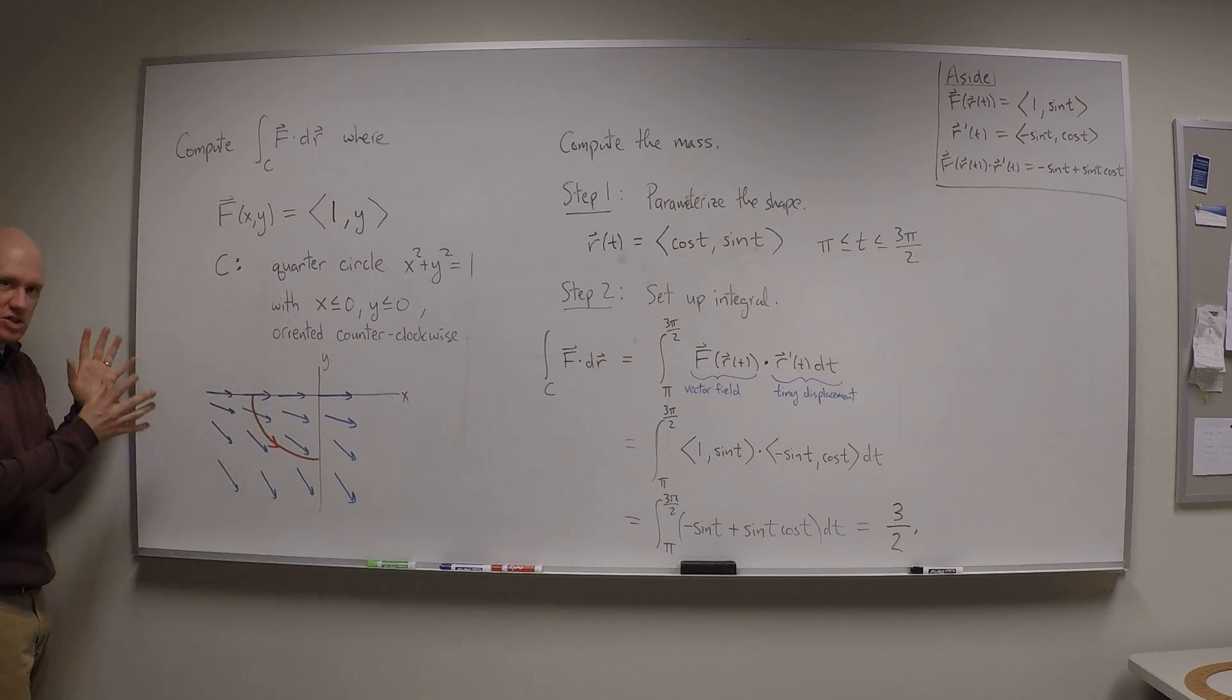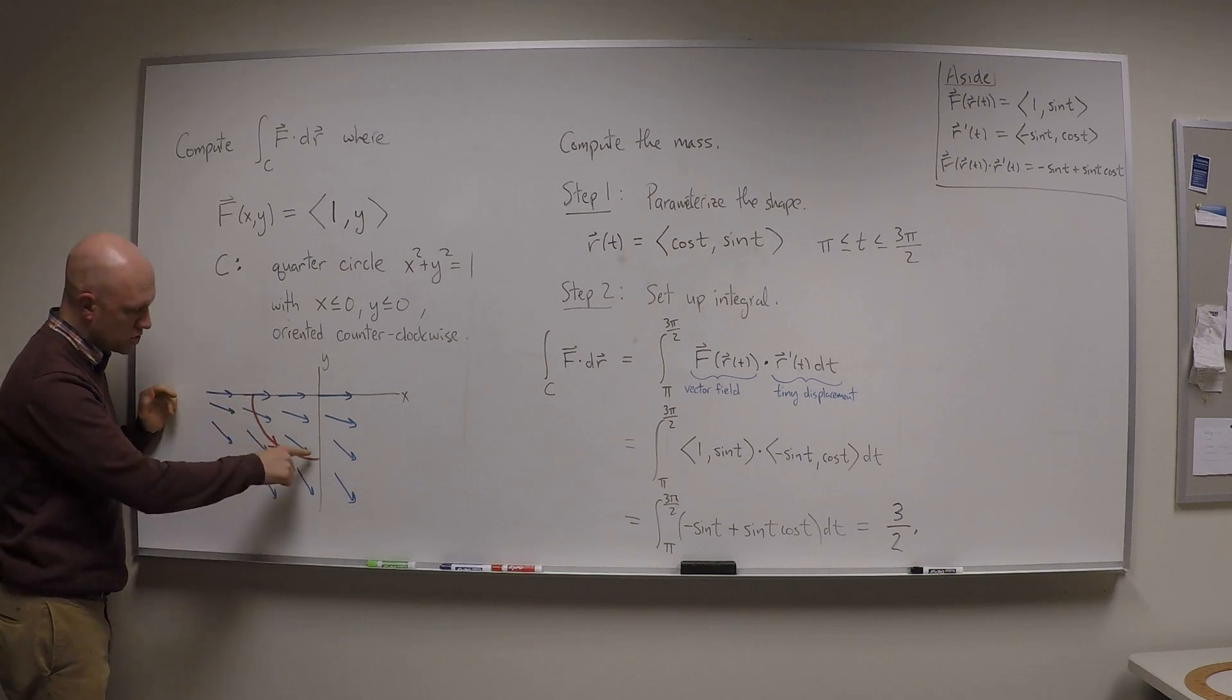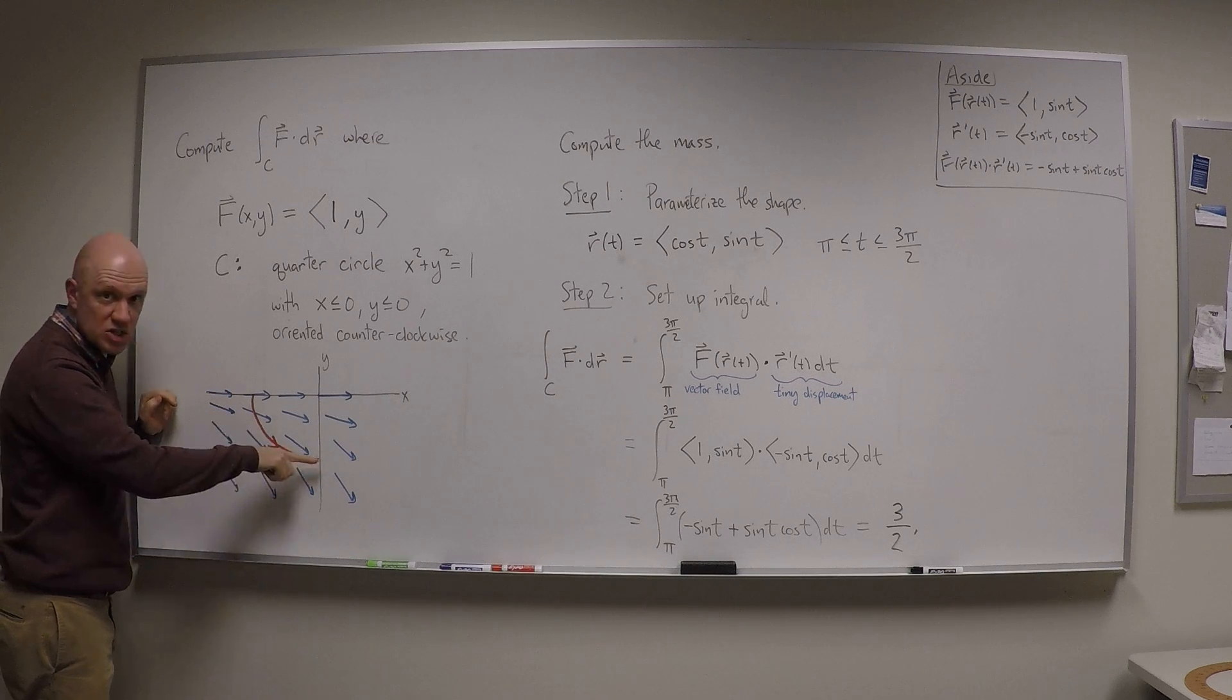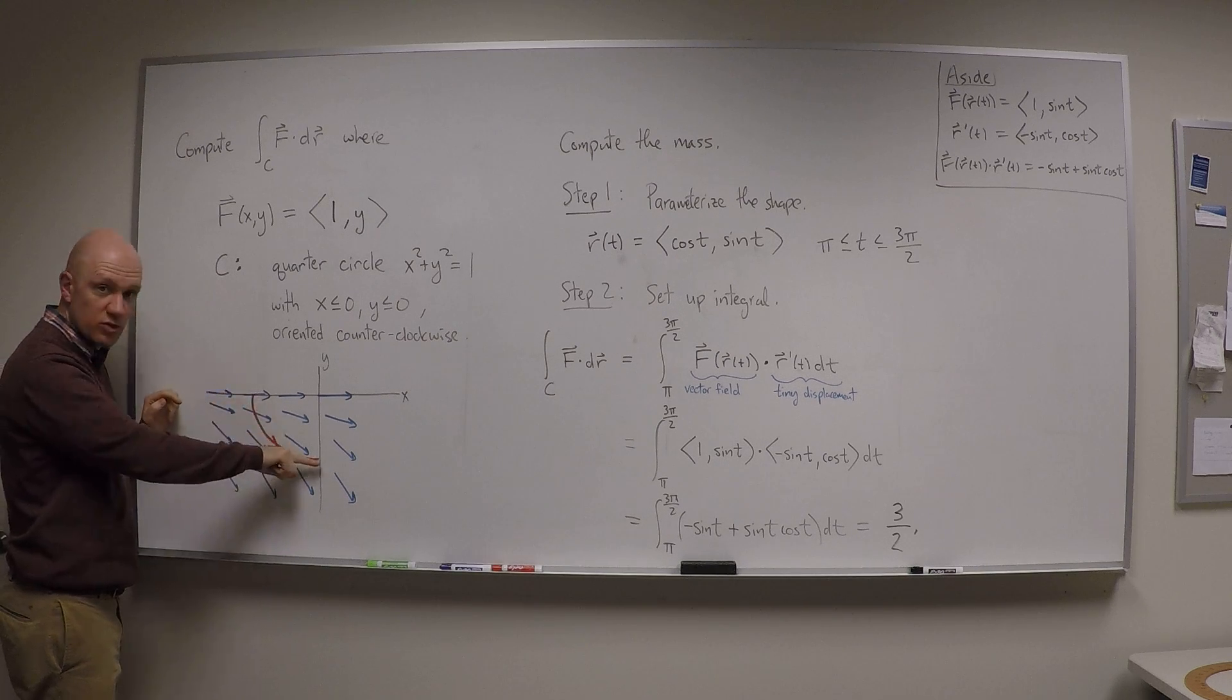So first of all, let's just look intuitively and think about what it is that we're going to expect. So we're integrating over this portion of the circle in this orientation, and I want to ask myself, what do I expect if I go with the flow of this vector field? Do I expect to see a positive result, or a negative result, or zero?